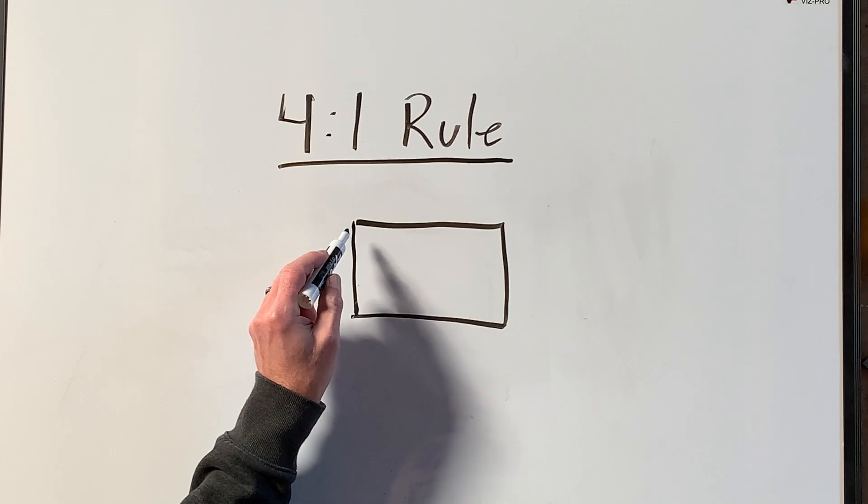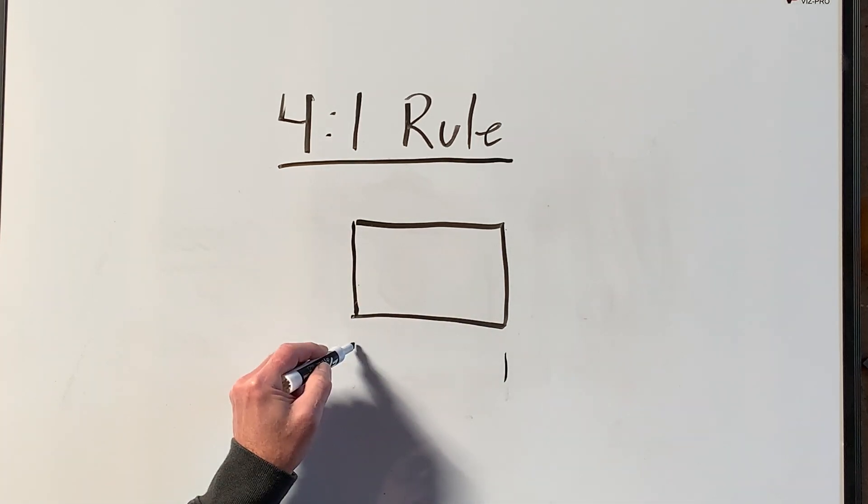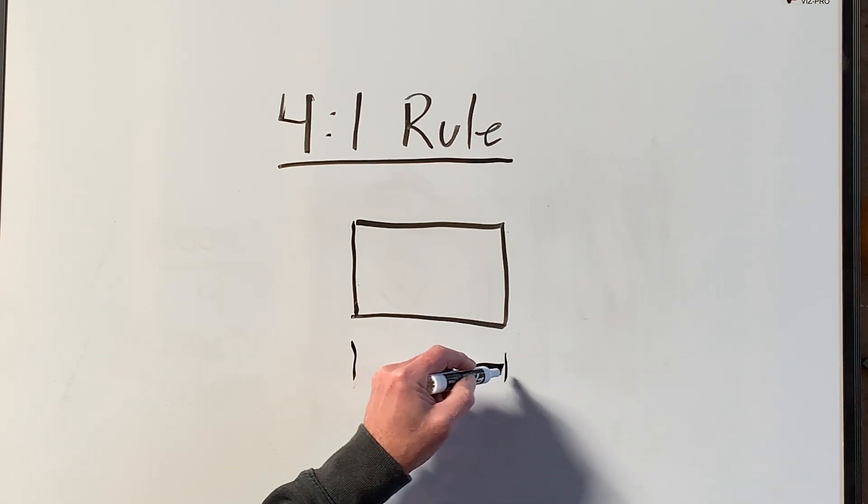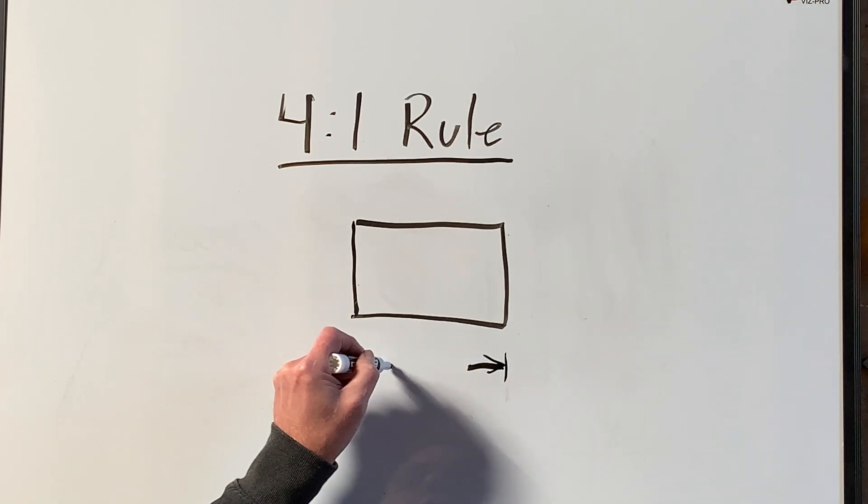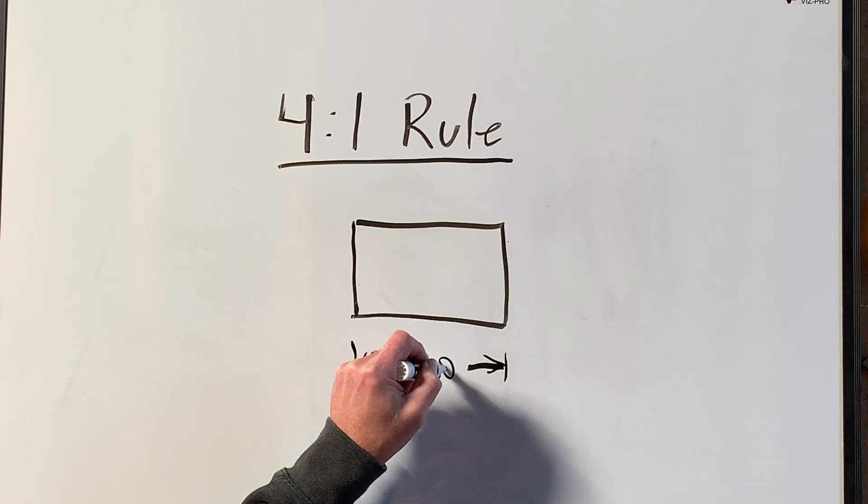The four to one rule is when you have your part—say this rectangle—and you have a dimension on that part, say four inches.